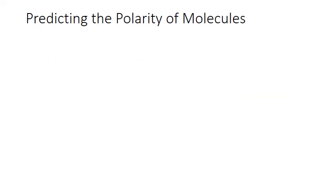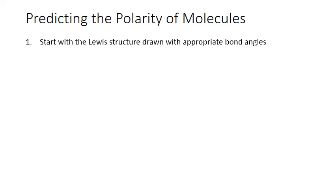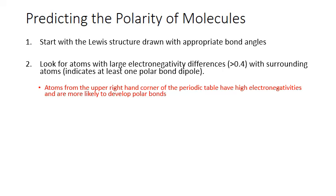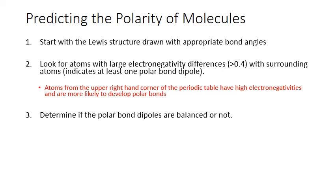Here are some guidelines for predicting molecular polarity. First, start with the Lewis structure with the appropriate bond angles. Second, look for atoms with large electronegativity differences with their surrounding atoms — greater than 0.4 — which indicates that you have a polar bond present. You're more likely to have polar bonds if you see atoms from the upper right-hand corner of the periodic table, such as nitrogen, oxygen, fluorine, and chlorine, which have higher electronegativities. Before you can say whether a molecule is polar overall, though, you have to determine if the polar bonds cancel each other out — whether they're balanced or not.